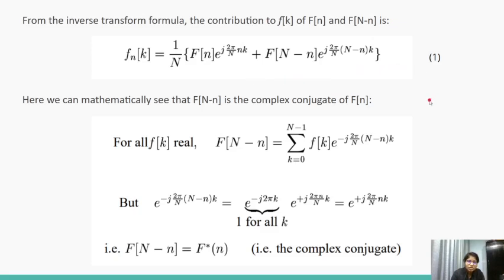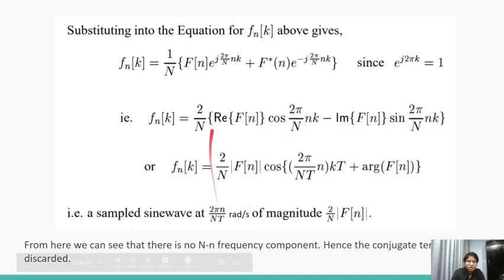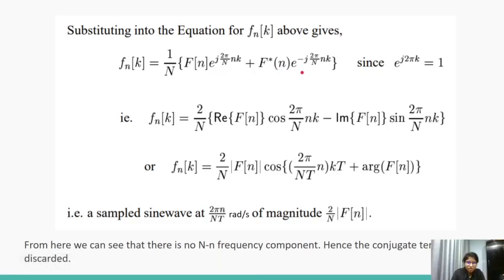We already saw that capital F[N-n] is a conjugate of F[n]. Here, we can see mathematical proof of the same. If we input this conjugation relation into the equation 1, we get this. Note that the first term and the second term are basically conjugates of each other. So the result of the summation will be nothing but twice of the real terms of the first term, which is given by this.